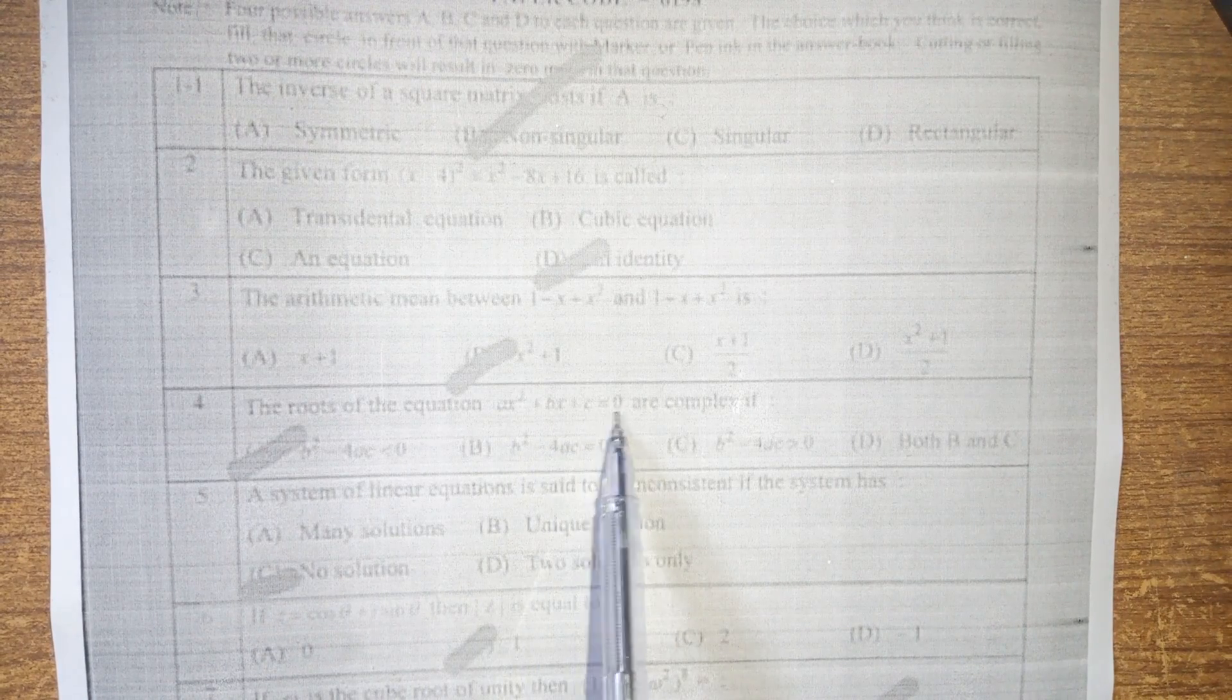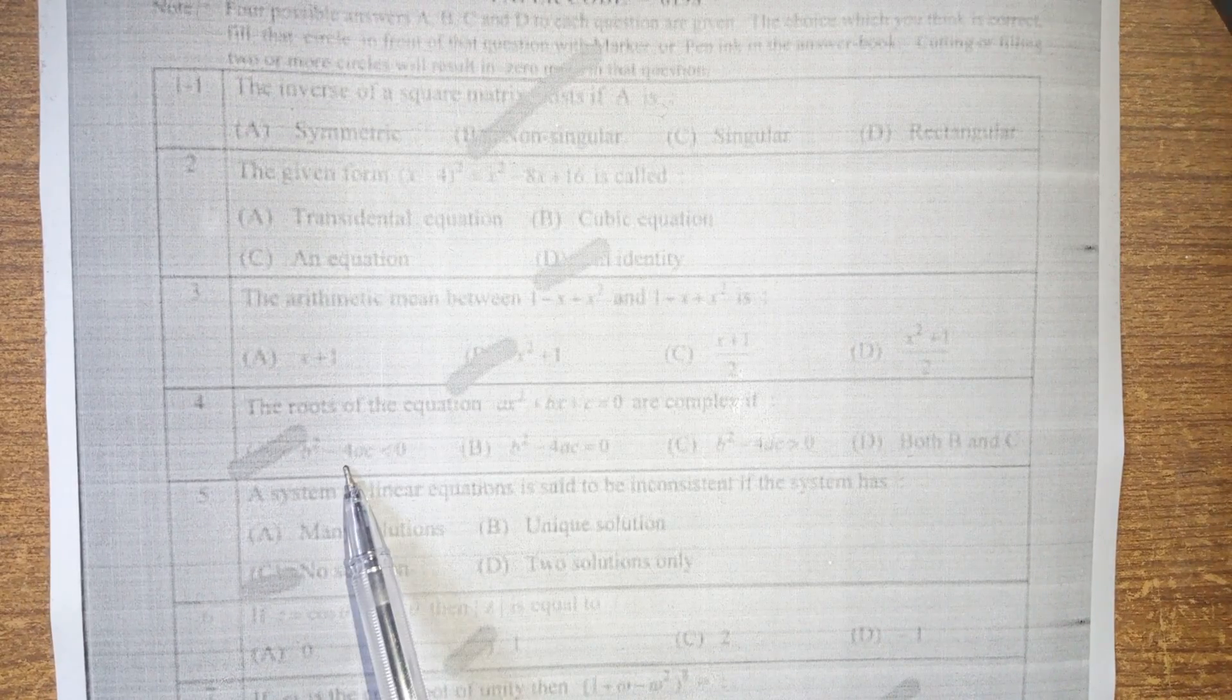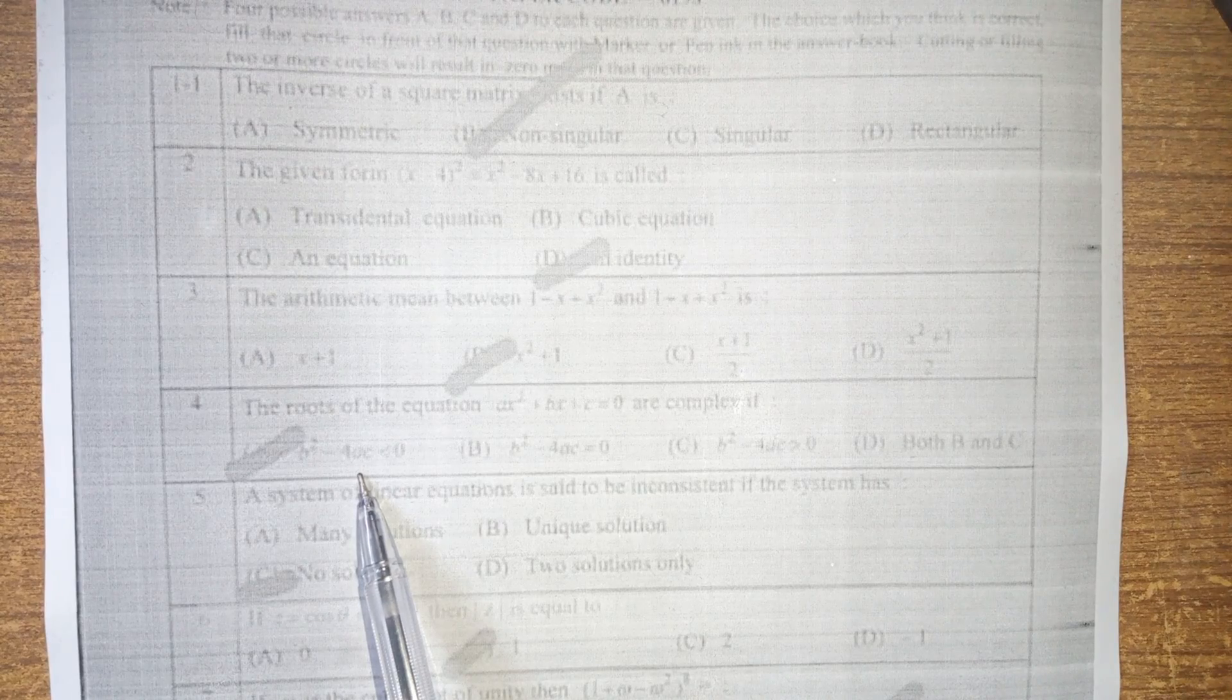After that, the roots of the equation ax squared plus bx plus c is equal to 0 are complex if b squared minus 4ac is less than 0. Option a is the right answer for this question.